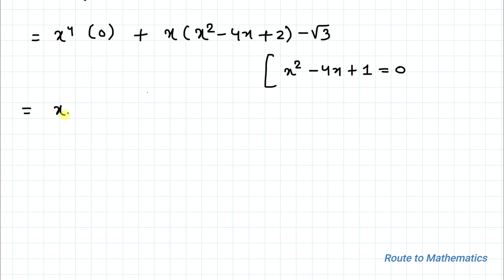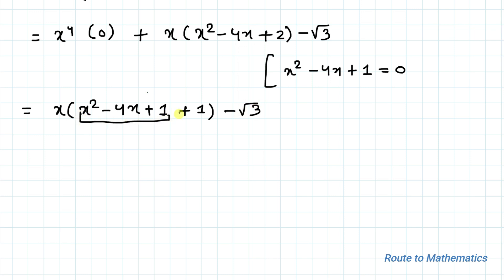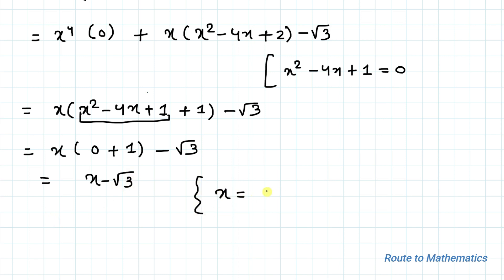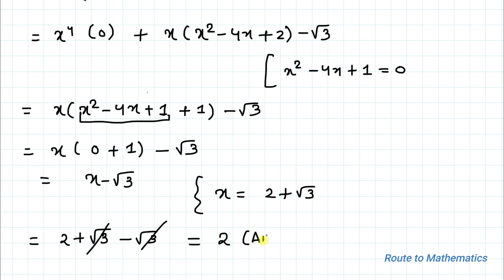We can write x² minus 4x plus 2 as (x² minus 4x plus 1) plus 1, which equals 0 plus 1 equals 1. So the expression becomes x multiplied by (1 minus √3) plus... wait — substituting gives x multiplied by (0 + 1 minus √3) simplifies, and since x minus √3 equals 2, we get x minus √3 equals 2, so the √3 terms cancel and we are left with 2 as our answer.